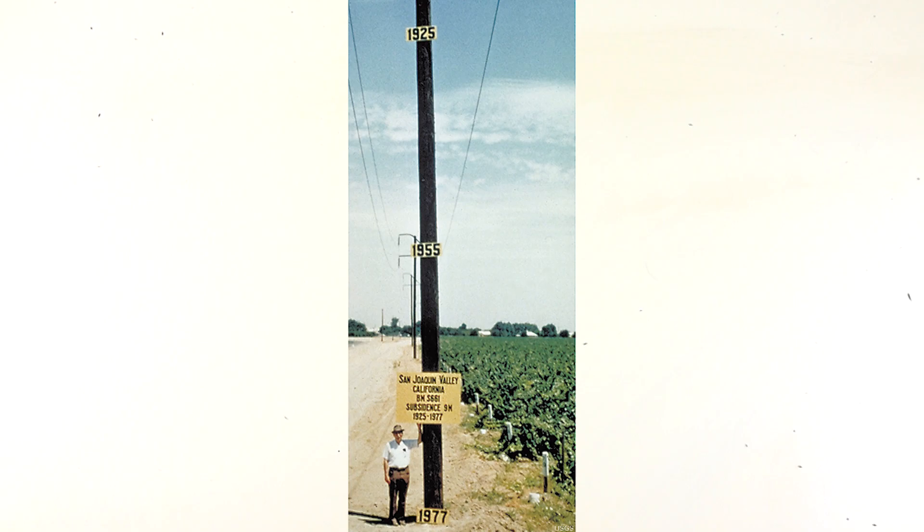Here is a picture of the San Joaquin Valley in California showing the height of the land in 1925, 1955 and 1977, showing how much the ground in the valley has sunk due to subsidence.